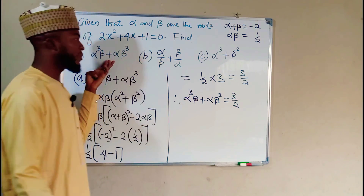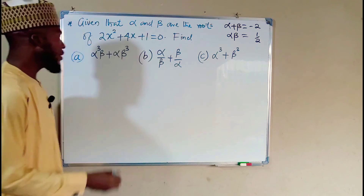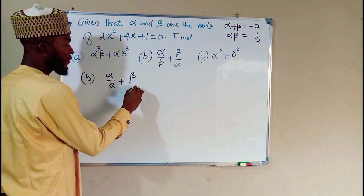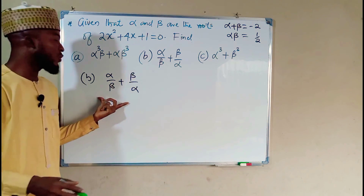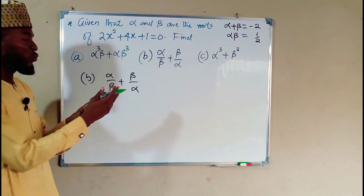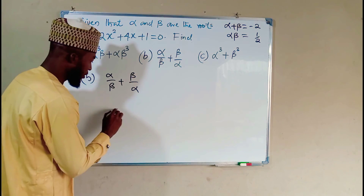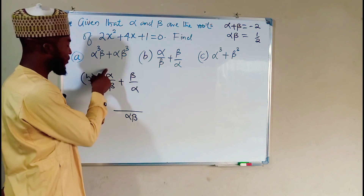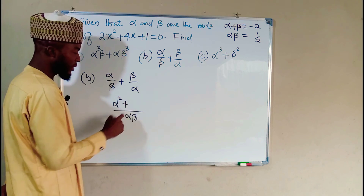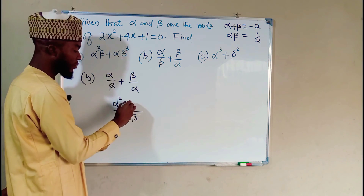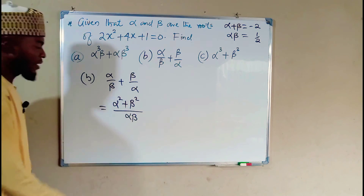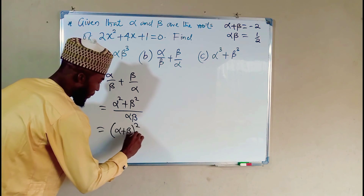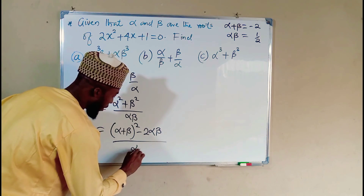And this is the solution for the first problem. Now let us look at the second one. The second problem: we have alpha over beta plus beta over alpha. Again, this does not correspond to any one of these. So let us transform these two fractions into a single one. The LCM is going to be alpha beta. This gives us alpha squared plus beta squared over alpha beta, which is the same as alpha plus beta squared minus 2 alpha beta, divided by alpha beta.